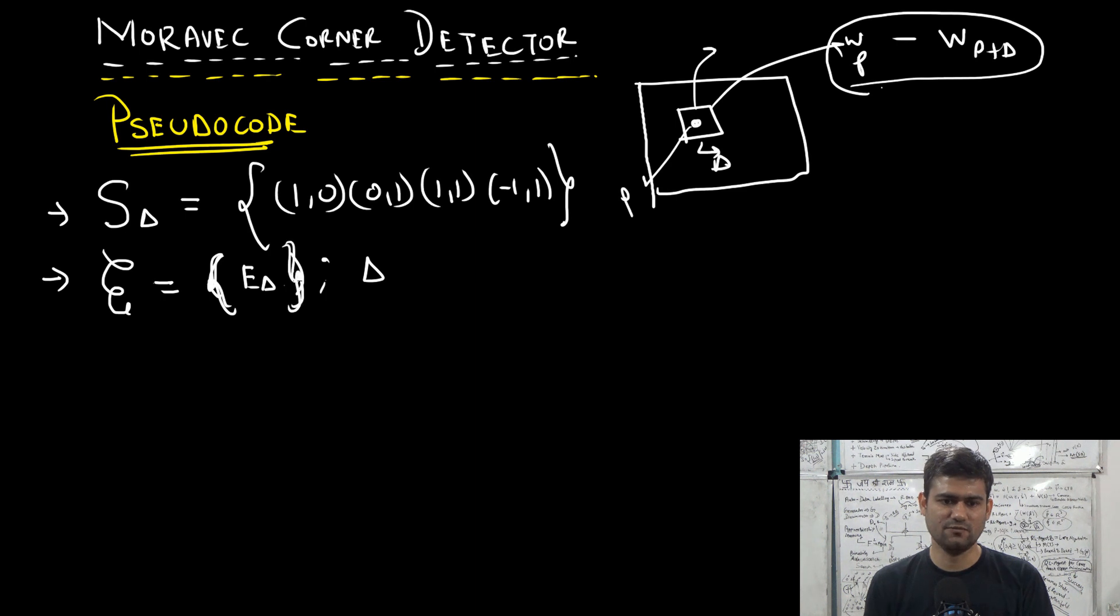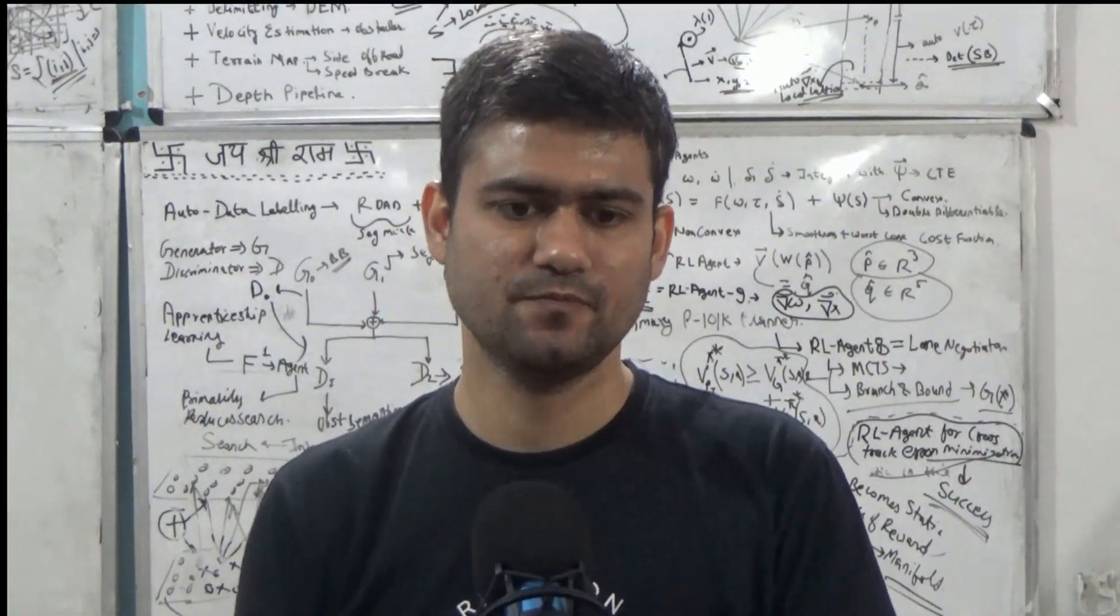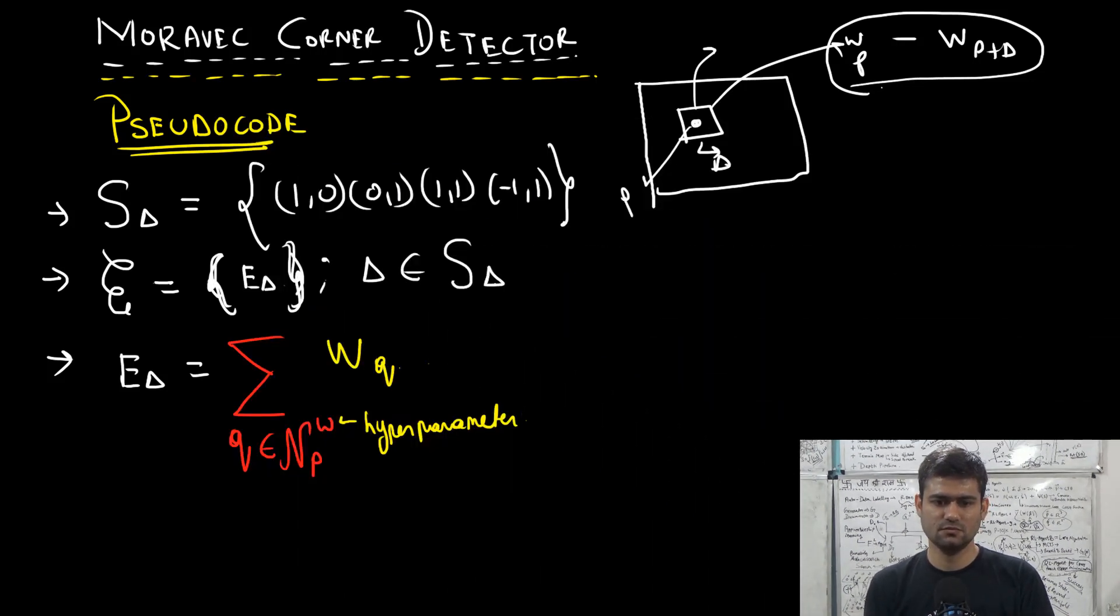We can write a set or a vector where delta belongs to S_delta, where E_delta is given by sum over all Q belonging to N_PW, the neighborhood pixels of pixel P in a window, and the size of this window is a hyperparameter. And we have a weighting scheme for weighting the differences of the pixels.